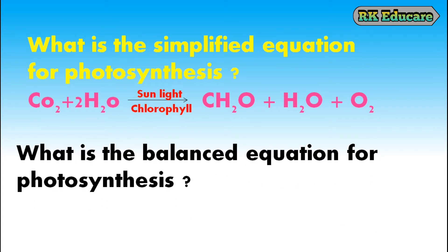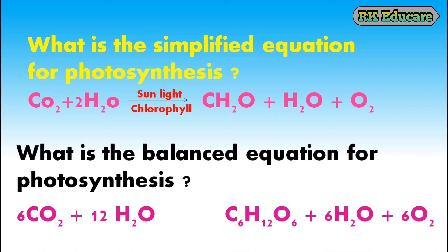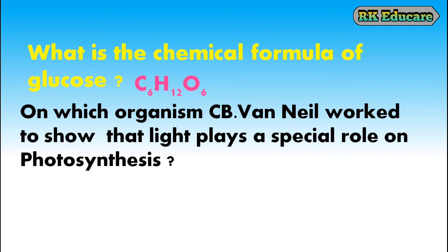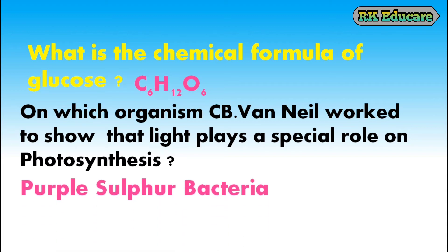What is the balanced equation for photosynthesis? 6CO₂ + 12H₂O in the presence of sunlight and chlorophyll produces C₆H₁₂O₆ + 6H₂O + 6O₂. What is the chemical formula of glucose? C₆H₁₂O₆ is the chemical formula of glucose. On which organism did C.B. van Niel work to show that light plays a specific role in photosynthesis? C.B. van Niel worked on purple sulfur bacteria.